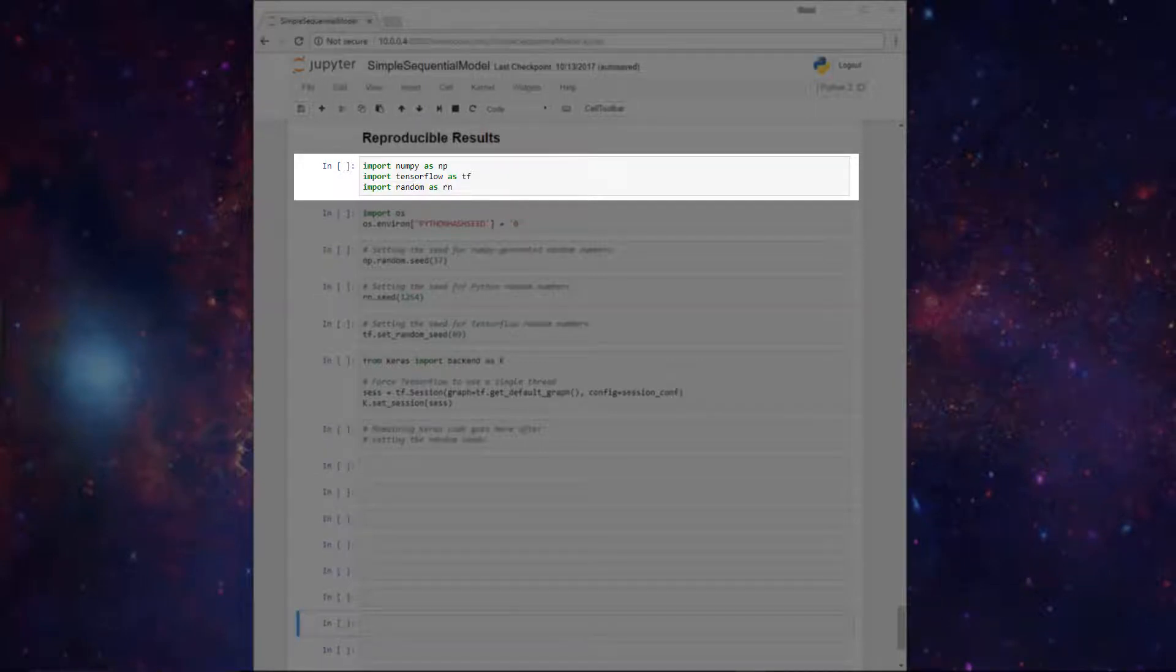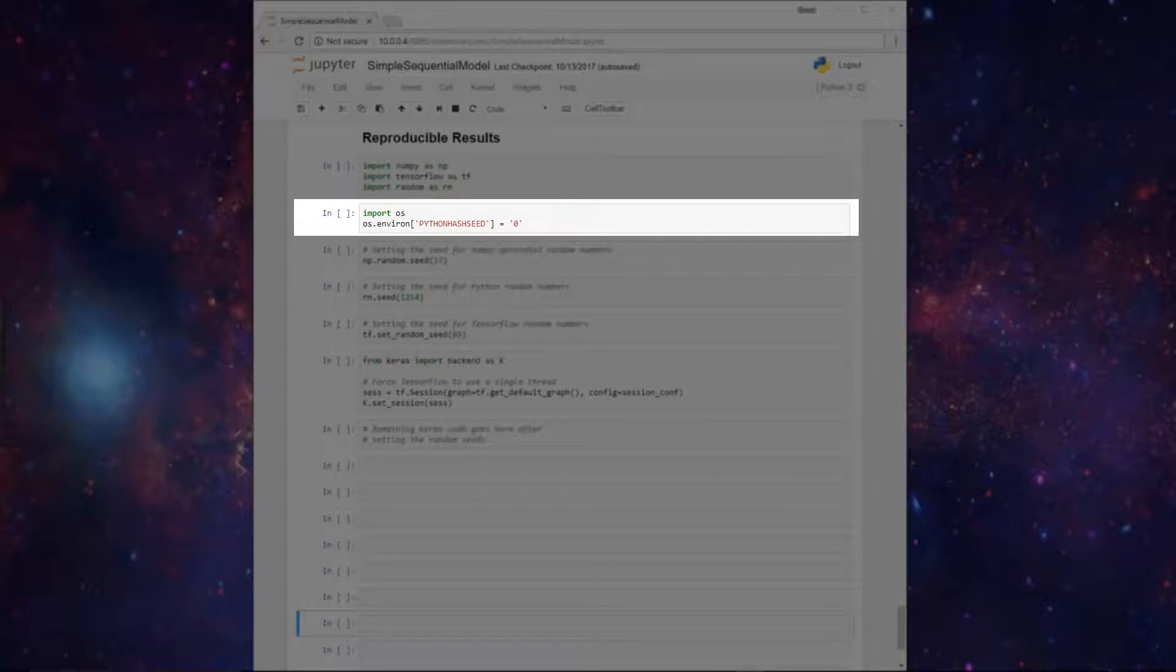As a quick aside, before we set the random seeds, the Keras documentation lets us know that this piece here, where we're setting the os.environ python hash seed equal to zero, is necessary for any reproducibility for certain hash-based algorithms, so we put that in right under our import statements.